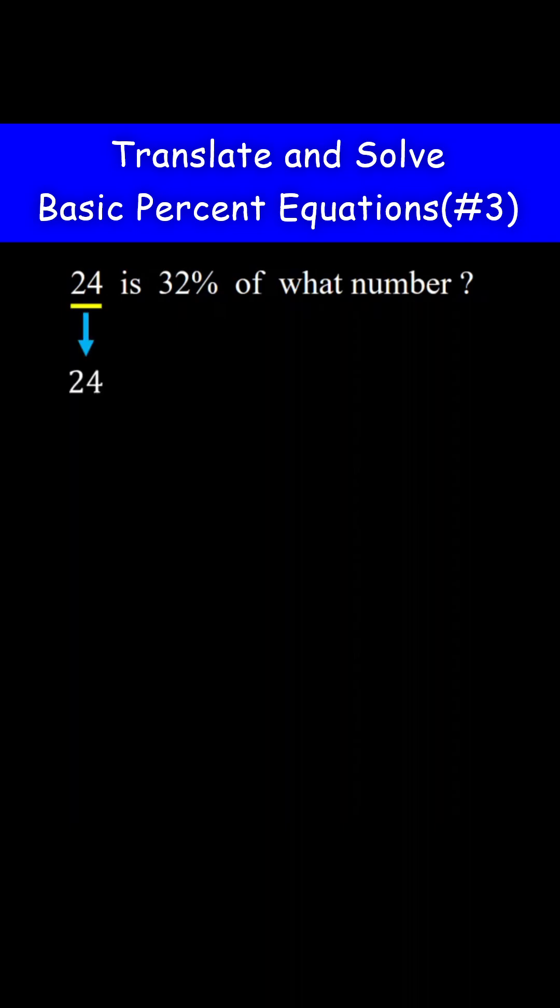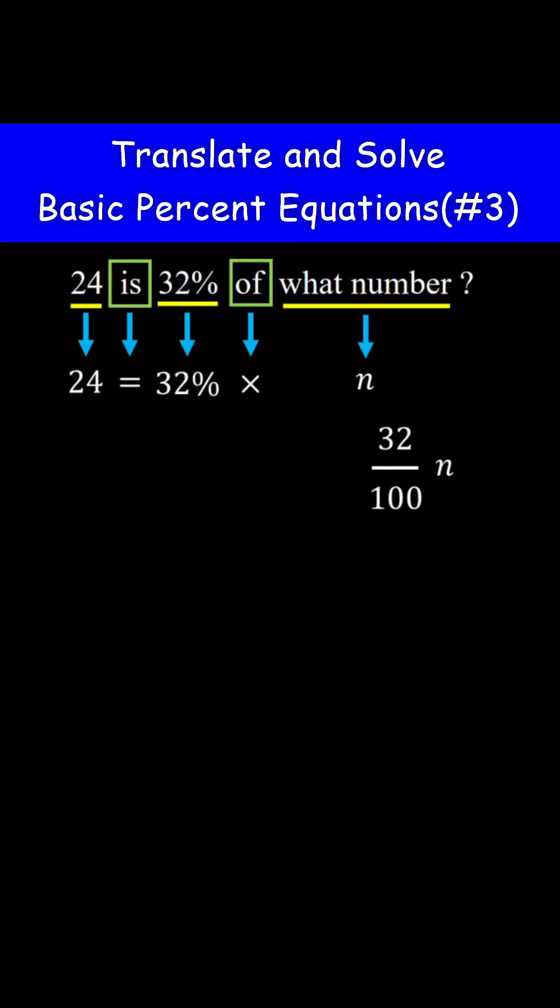We have 24. In algebra, in this type of problem, the word 'is' translates to an equal sign. We have 32%. The word 'of' means to multiply. Let's say the number you are asked to find be n. 32% means 32 over 100. We have n. 24 in fraction form means 24 over 1.